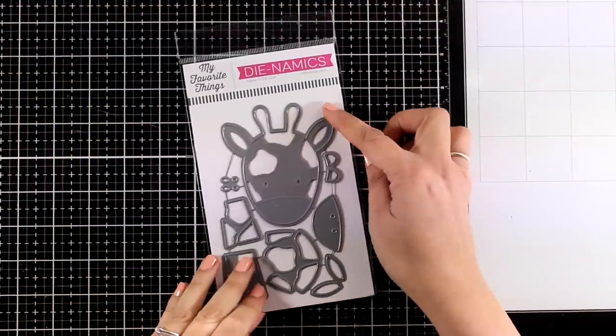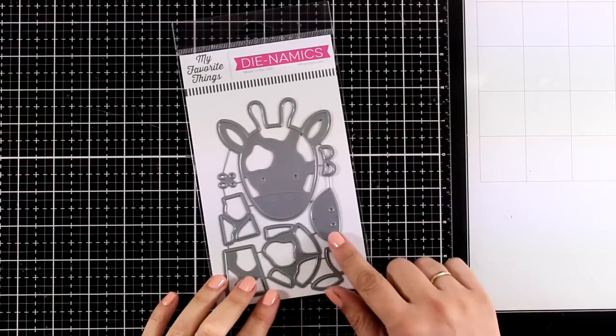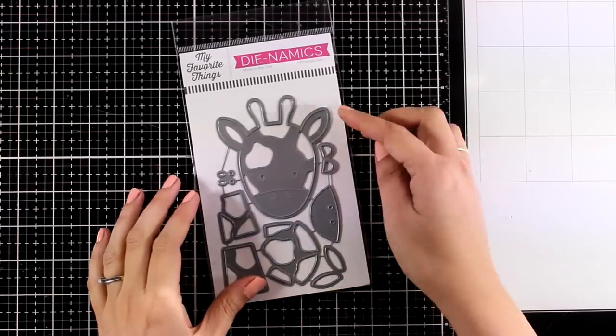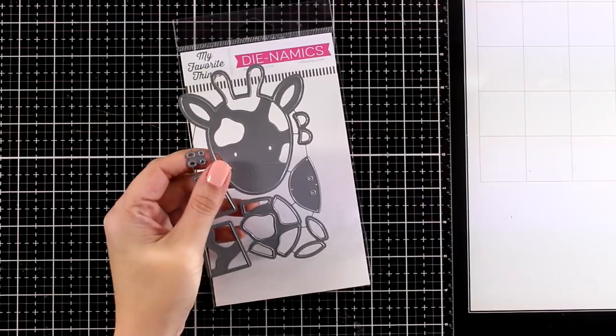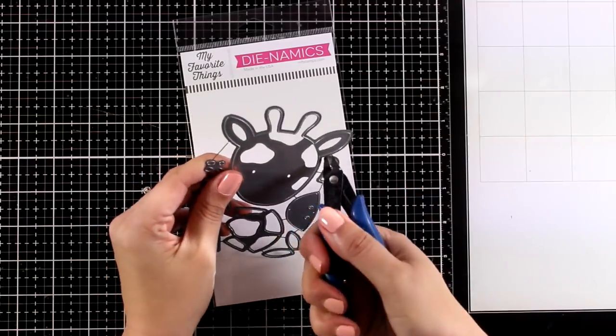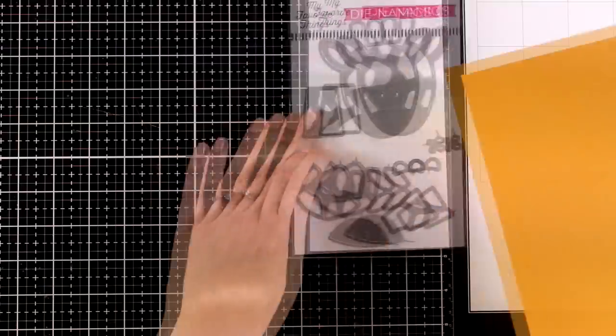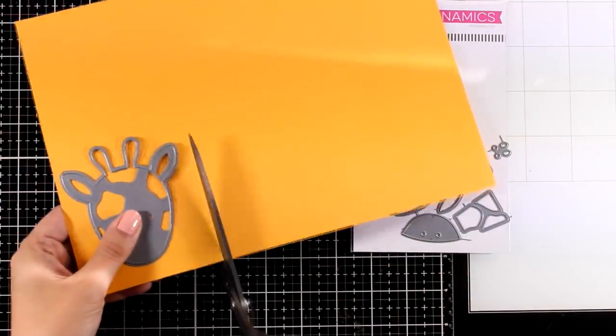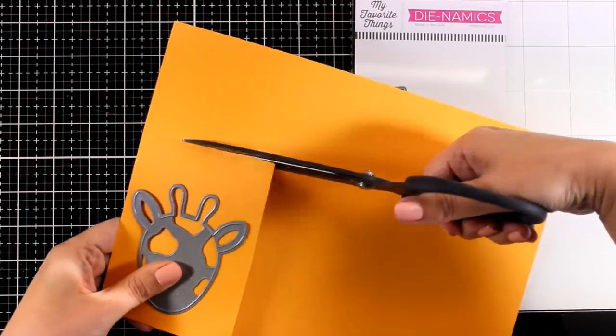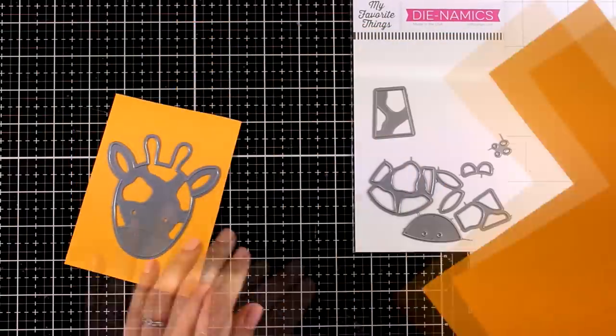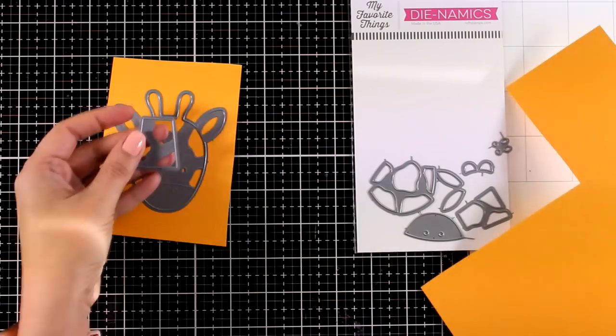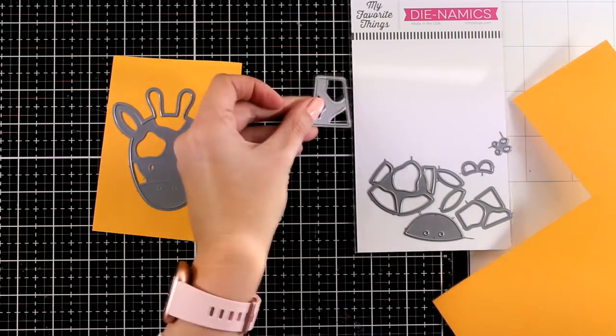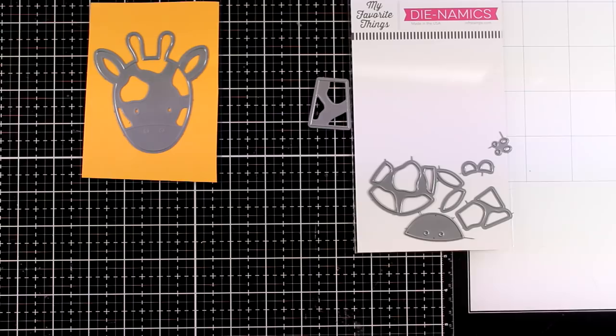For my first card I'm going to play with my favorite die from the new release by My Favorite Things. This is the Joyful Giraffe, absolutely adorable when you put it together and super easy to create. When I saw this die I knew I wanted to create a super long neck for my giraffe that would make her the perfect focal point for a slimline card. I'm going to show you how I'm going to modify this neck and make it super long.